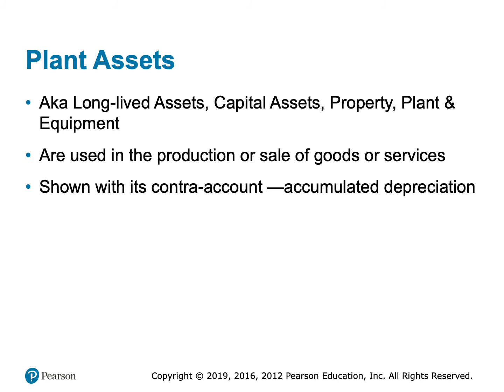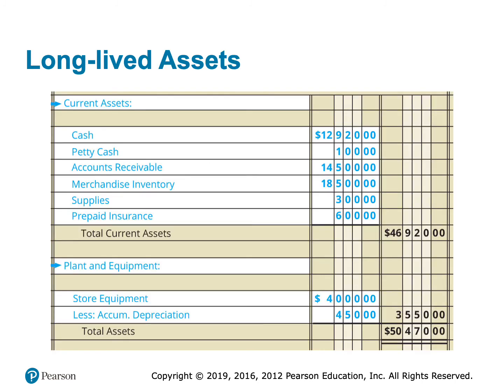Plant assets are long-lived assets, also called property, plant and equipment, capital assets, or fixed assets. These are assets we use in our business operations. If any of those assets are depreciated — which everything except land is — don't forget to subtract the accumulated depreciation account right underneath the asset as its contra account. Here we see store equipment, and right underneath it accumulated depreciation with parentheses to remind us to subtract. That gives us the net book value in the second column. We add current assets and long-term assets to get total assets, then double underline at the end.